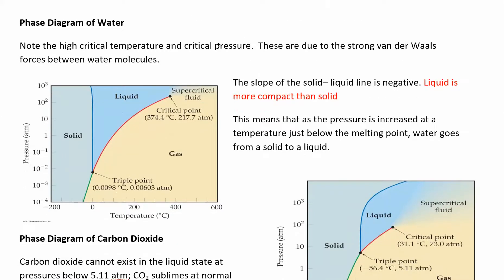Phase diagrams of water. Water is a little weird — the solid-liquid line is in the opposite direction compared to other substances. Most solid-liquid lines have a positive slope, but water's has a negative slope. That's because water is weird: the density of solid water is less than liquid water. When water freezes it expands, ice cubes float on the surface of the liquid, and this gives you a funky phase diagram.